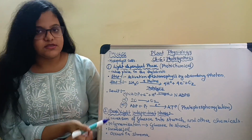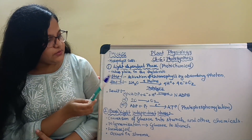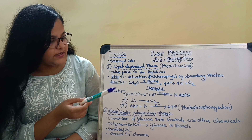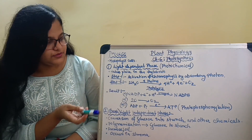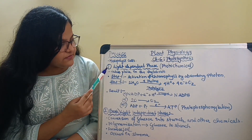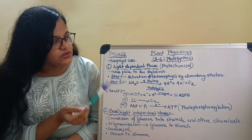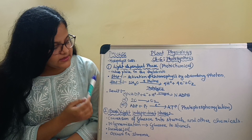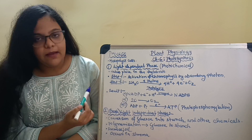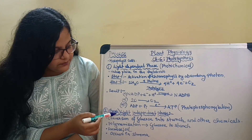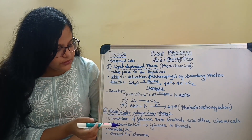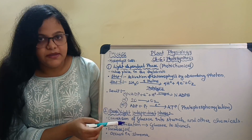Now let us discuss the processes. Chlorophyll absorbs sunlight and then photosynthesis occurs. Photosynthesis is divided into two phases: one being the light phase, that is the light-dependent phase or the photochemical phase. The second phase is the dark phase. The dark phase doesn't mean it only happens at night — it means this phase is not dependent on light, so it is better called the light-independent phase.